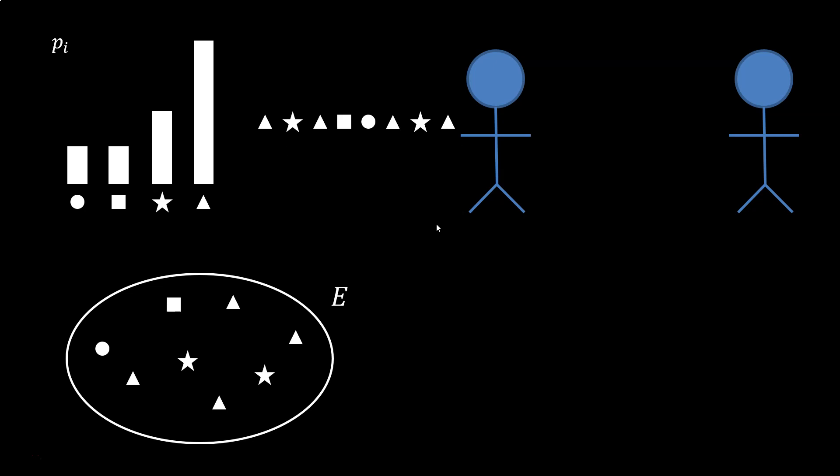Note that the set and the distributions do not have any order. Also note that the elements can be told apart only up to the properties selected, so in the example we cannot tell the triangles apart.